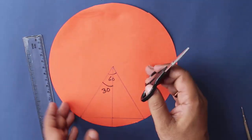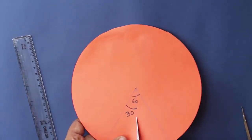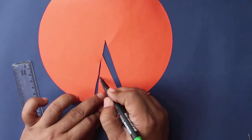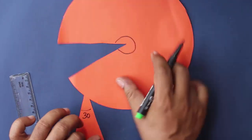Now we can cut this sector out and it leaves us with two sectors of 30 degree and 330 degree. And now we can make cones from both these sectors.